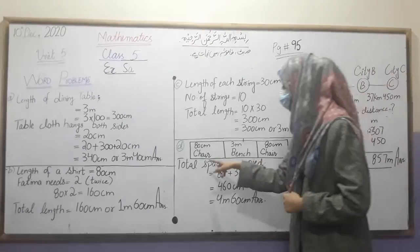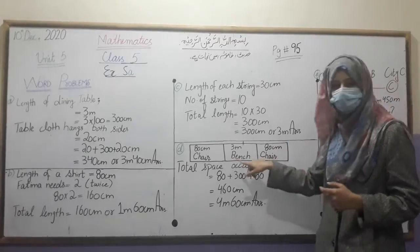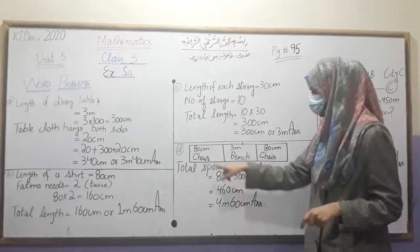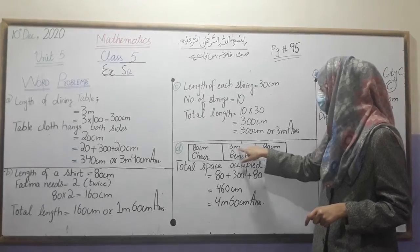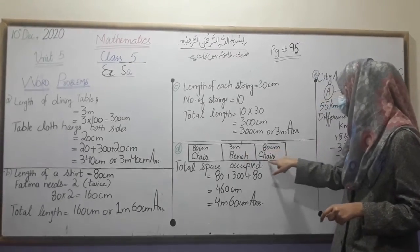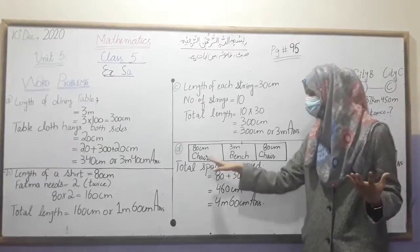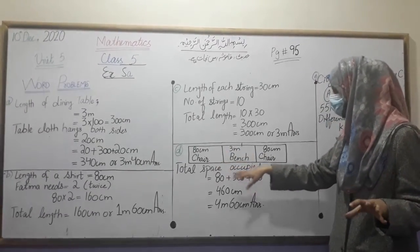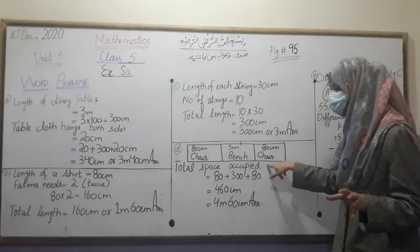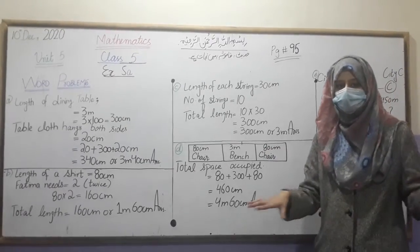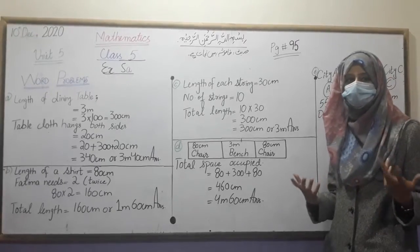Now part D. Students, these values are already given. We have 80 centimeters chairs and a 3-meter bench, and 80 centimeter chairs again. We need to find the total space required in the classroom for the chairs and benches combined.